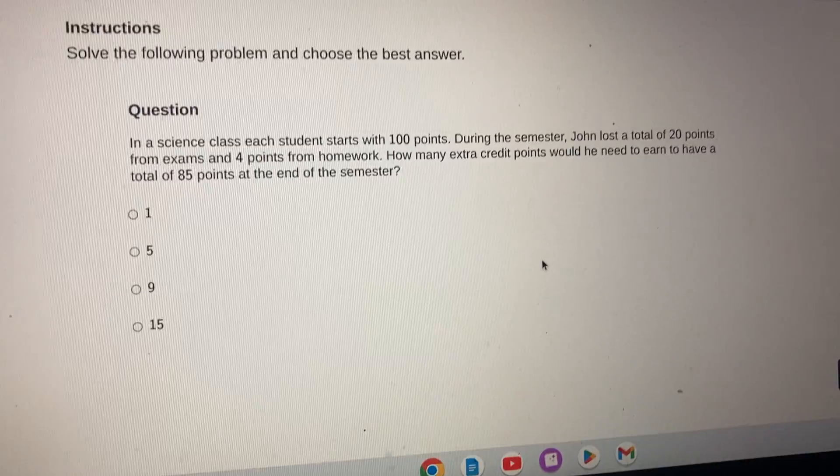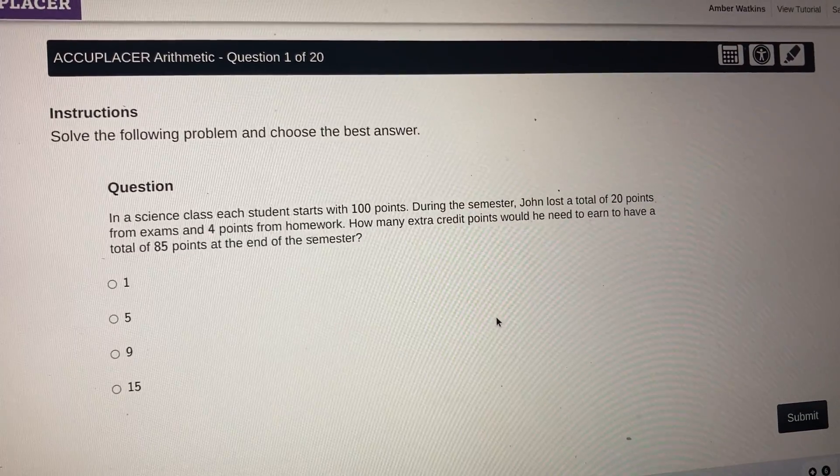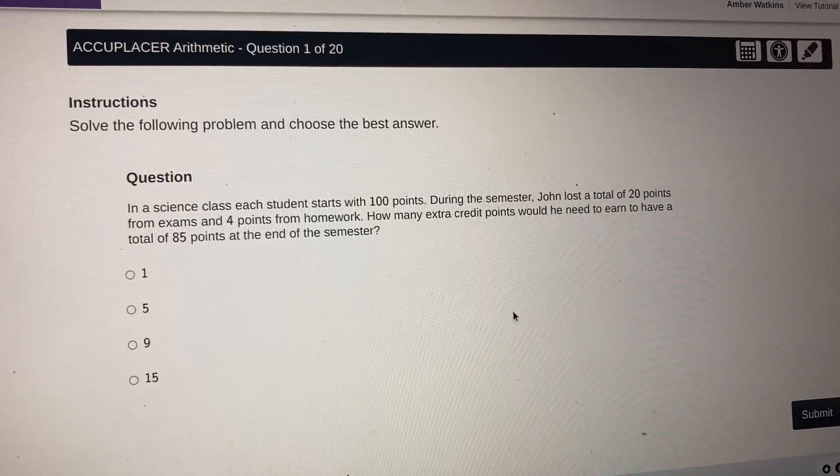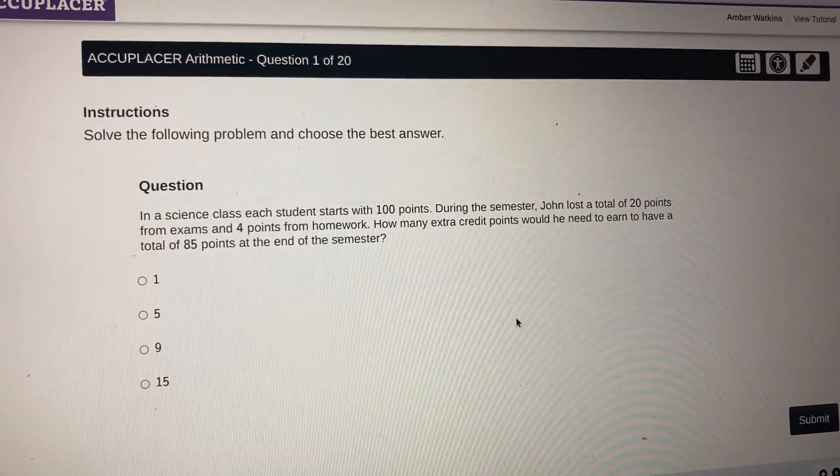The question is: in a science class each student starts with 100 points. During the semester John lost a total of 20 points from exams and 4 points from homework.